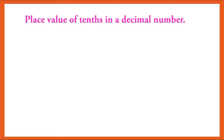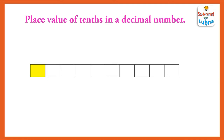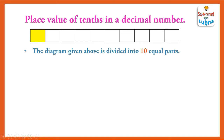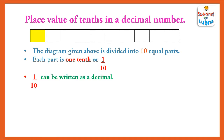Now we are going to discuss place value of tenths in a decimal number. Here you can see a figure is given and it is divided into ten equal parts: one, two, three, four, five, six, seven, eight, nine, ten. The diagram is divided into ten equal parts; each part is one tenth or one upon ten. One upon ten can be written as a decimal.